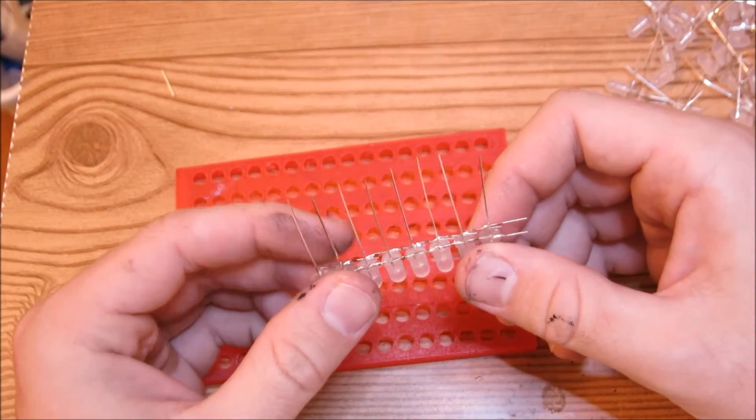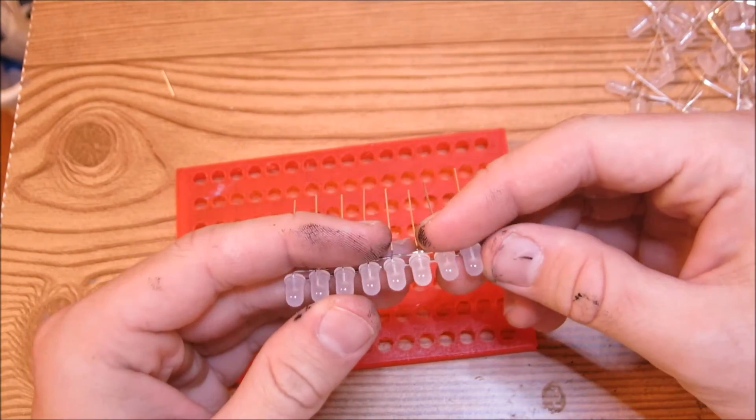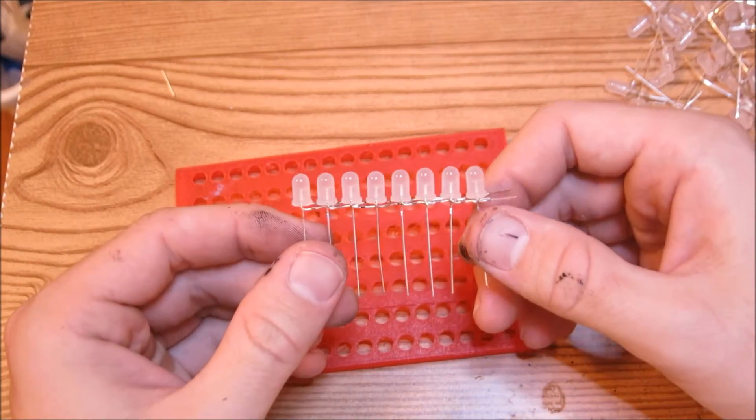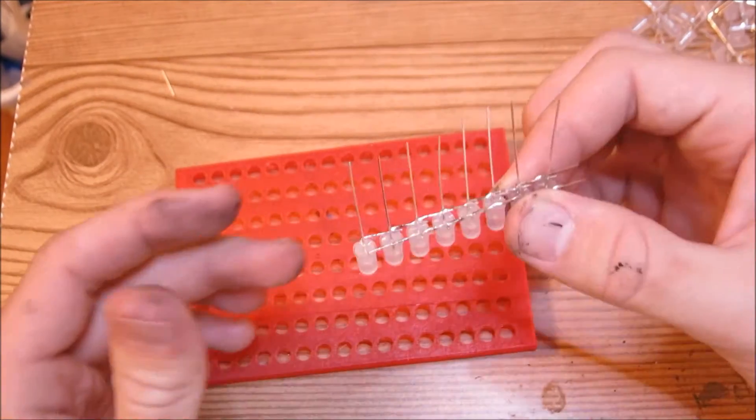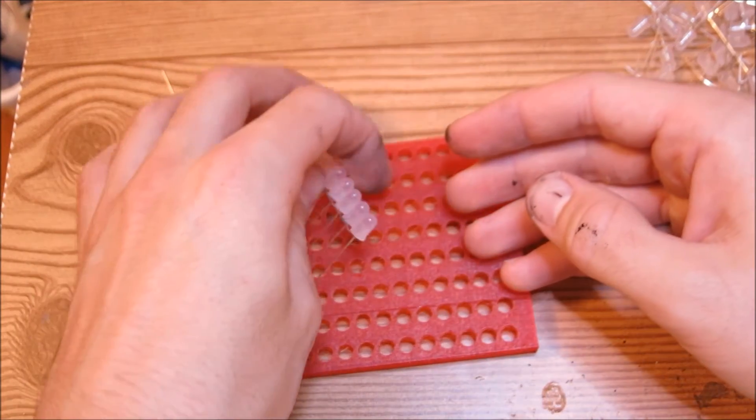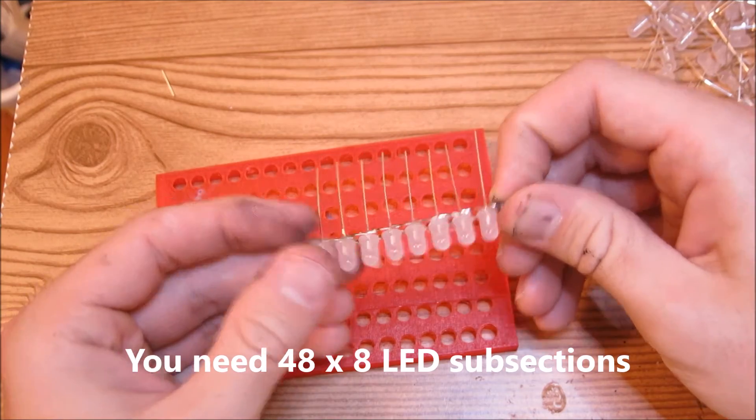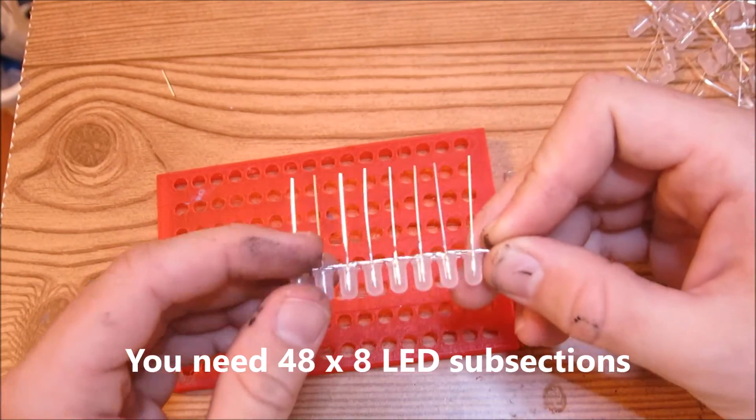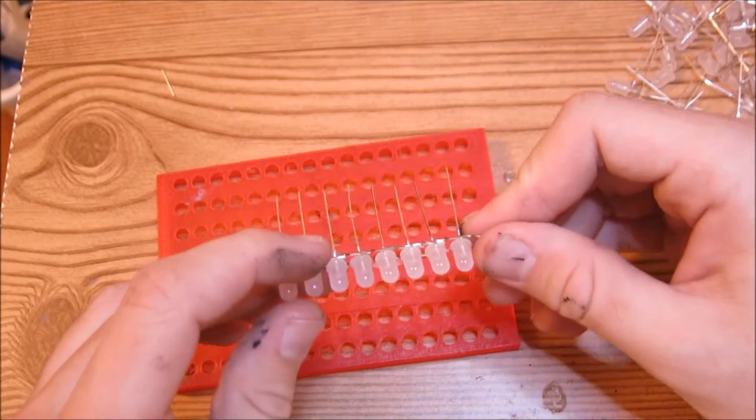Here we have a completed subsection of eight LEDs. You'll notice that they're all soldered together and they're ready to go. Make sure you make sections of eight. Not anything smaller, not anything larger. You need eight LEDs in one subsection. You want to make 48 of these. Again I'll do another time lapse and show you how I'm going to make all the other ones.